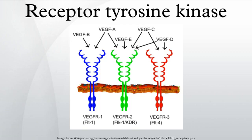Receptor tyrosine kinases are the high affinity cell surface receptors for many polypeptide growth factors, cytokines, and hormones. Of the 90 unique tyrosine kinase genes identified in the human genome, 58 encode receptor tyrosine kinase proteins. Receptor tyrosine kinases have been shown not only to be key regulators of normal cellular processes, but also to have a critical role in the development and progression of many types of cancer.